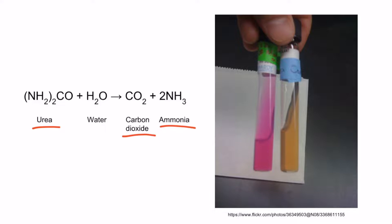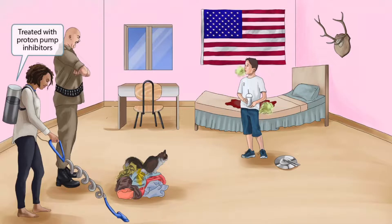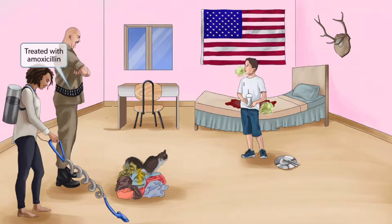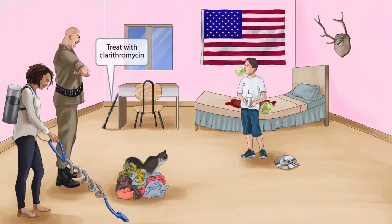Remember how the mom was vacuuming up the dirty floor? The vacuum is a type of pump, so we've shown it here to help you remember that H. pylori can be treated with proton pump inhibitors. Remember the ammo belt around the strict military stepdad — that's here to help you remember that H. pylori should also be treated with amoxicillin. Finally, we've shown a clarinet leaned up against the desk because clarinet sounds like clarithromycin. In summary, H. pylori should be treated with triple therapy: amoxicillin, clarithromycin, and a proton pump inhibitor.